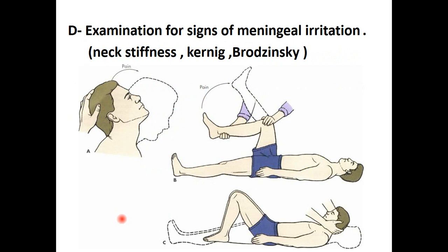Number four in general neurological examination is examination for signs of meningeal irritation. If the patient has meningeal irritation — for example, meningitis or subarachnoid hemorrhage — he may have neck stiffness. You have to examine and look for stiff neck, which is very difficult and causes pain when moving the head, with the chin unable to reach the anterior part of the chest.